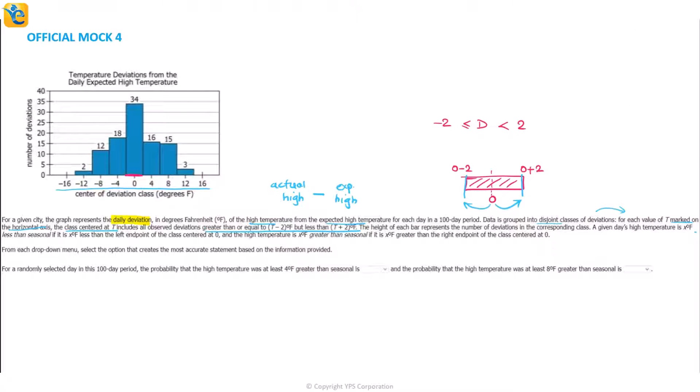Then further, a given day's high temperature is x degrees Fahrenheit less than seasonal. This is some definition. X degrees less than seasonal means if it is x degrees Fahrenheit less than the left endpoint of the class centered at zero. It is simply talking about left endpoint of class centered - we just saw that in our example, this is negative 2. So if it is x degrees Fahrenheit less than negative 2, that means negative 2 minus x. Simply, you can take an example: consider your temperature to be say negative 10 degrees Fahrenheit. Then negative 10 can be written as negative 2 minus 8, and you see this is where the x matches the 8, which means you can say that negative 10 degrees Fahrenheit is 8 degrees Fahrenheit less than seasonal.